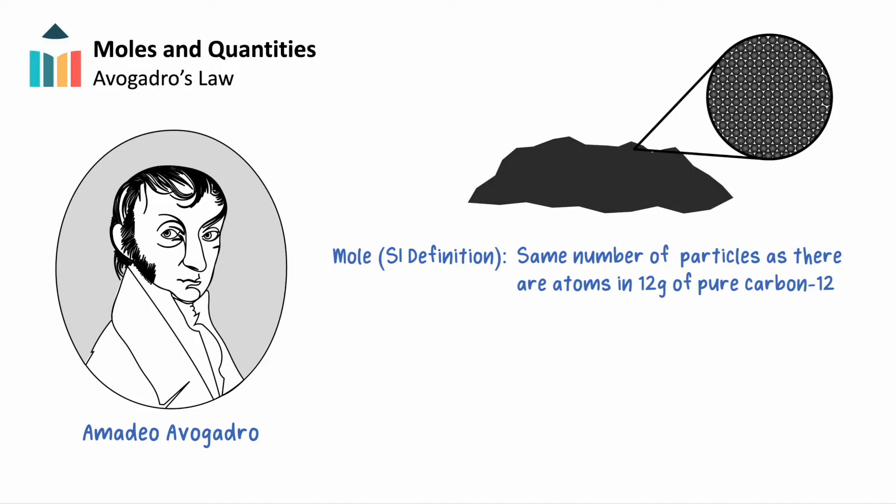Over time, this initial measurement has been refined, with Avogadro's constant now measuring a more precise 6.02214129 times 10 to the 23rd carbon-12 atoms in 12 grams of carbon.